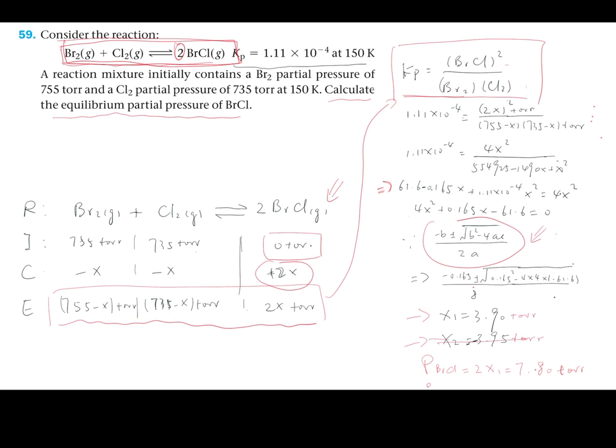Therefore, x2, which is a negative value, should be ruled out. So we have x equals 3.9 torr. However, the equilibrium partial pressure of bromine monochloride is 2x, as specified in the RICE table. Thus, its true partial pressure is twice x, equal to 7.8 torr.